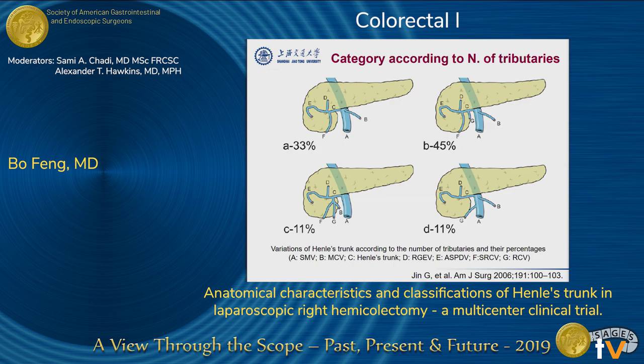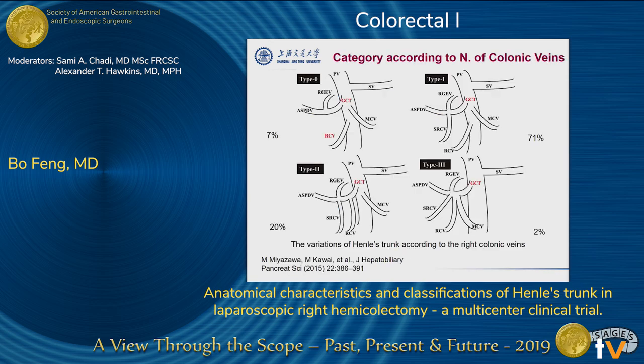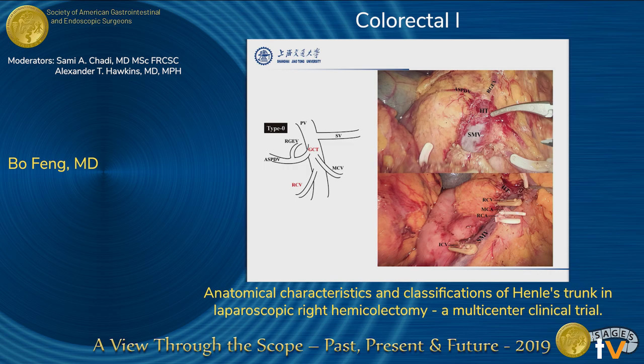According to the anatomy, there is a figure published in 2016 by a pancreatic surgeon group trying to categorize Henle's trunk by its different tributaries. However, there is another classification method published in 2015 by Japanese doctors, categorizing by the number of colonic veins draining into Henle's trunk. This method is considered more convenient for colorectal cancer surgery review. Type 0 represents no vein from the colon.